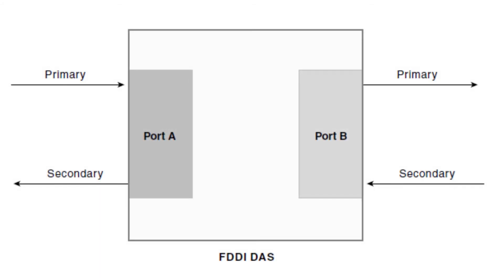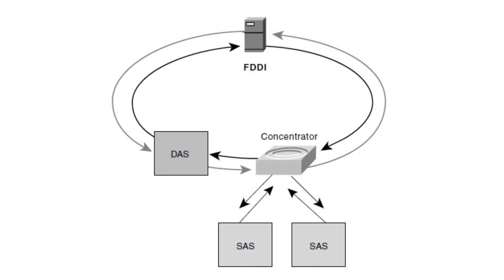Each FDDI DAS has two ports, designated A and B. These ports connect the DAS to the dual FDDI ring. Therefore, each port provides a connection for both the primary and secondary rings. Devices using DAS connections will affect the rings if they are disconnected or powered off. An FDDI concentrator, also called a dual attachment concentrator, is the building block of an FDDI network. It attaches directly to both the primary and secondary rings, and ensures that the failure or power down of any SAS does not bring down the ring. This is particularly useful when PCs or similar devices that are frequently powered on and off connect to the ring.